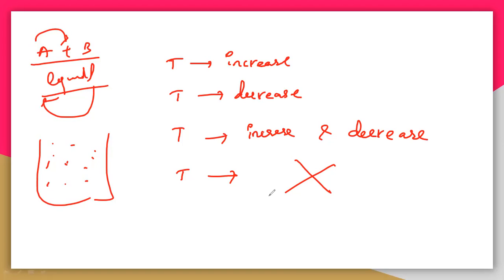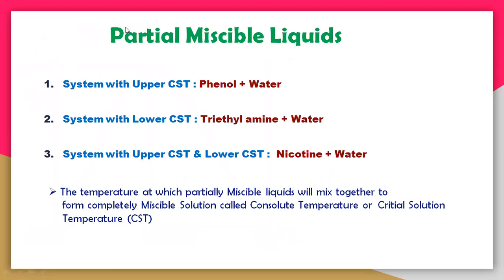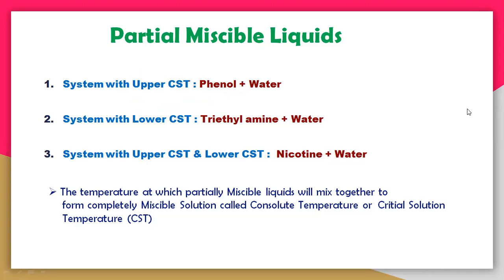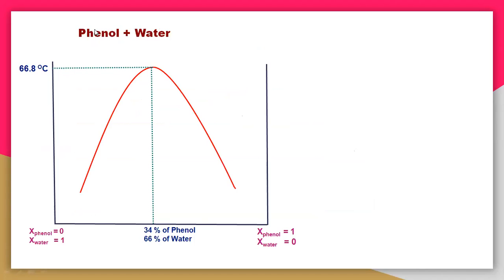Partial miscible liquids are classified into three types: system with upper CST, system with lower CST, and system with both upper and lower CST. Upper CST is the temperature above which the two partial miscible liquids are completely converted into a miscible solution. The best example is phenol and water. Let us look at the phenol-water graph.